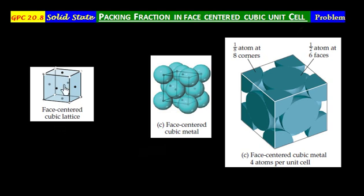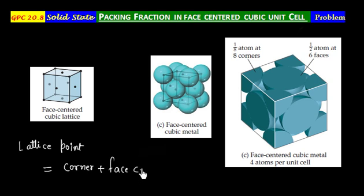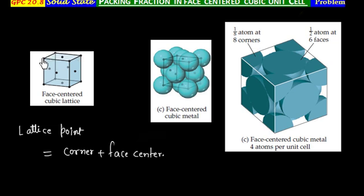Along with corner atoms, all faces are also lattice points. So in case of face centered, we have lattice points at corners and at face centers. We will place atoms at these lattice points, and if we do that, we get this space filling model.